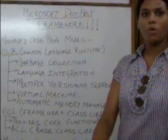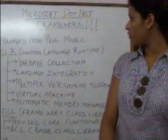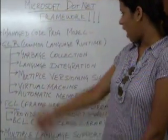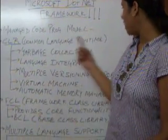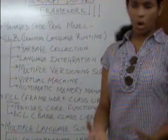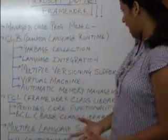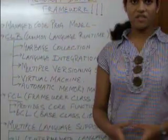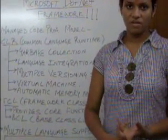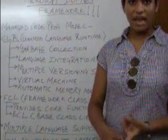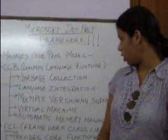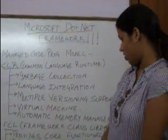Now talking about the core of Microsoft .NET Framework. First, the CLR which is the Common Language Runtime. This accounts for garbage collection — that is, all the unused buffers, objects, and data can be cleared automatically using garbage collection.